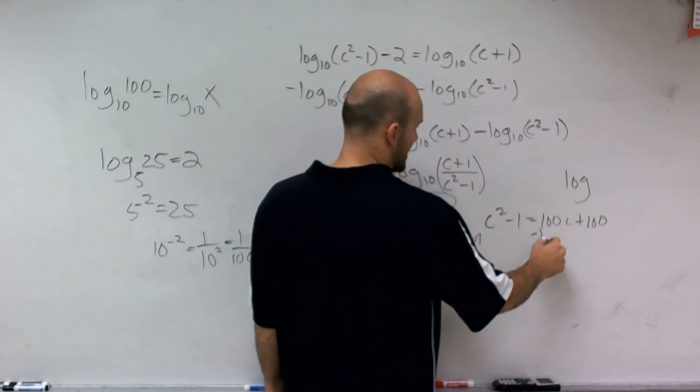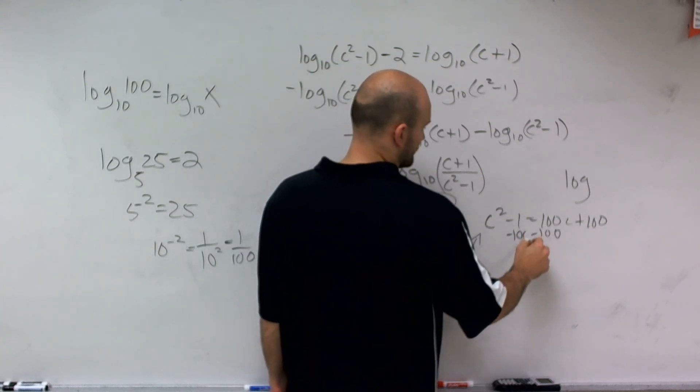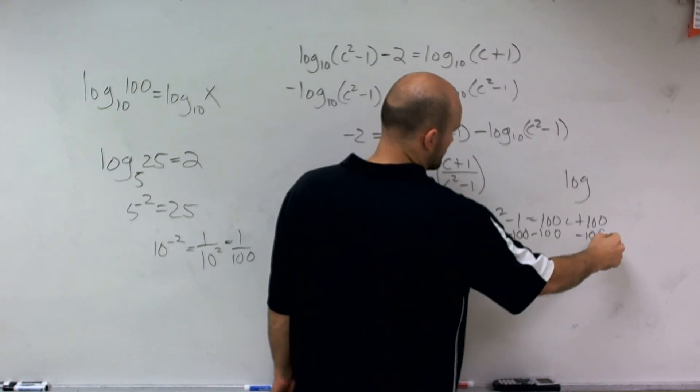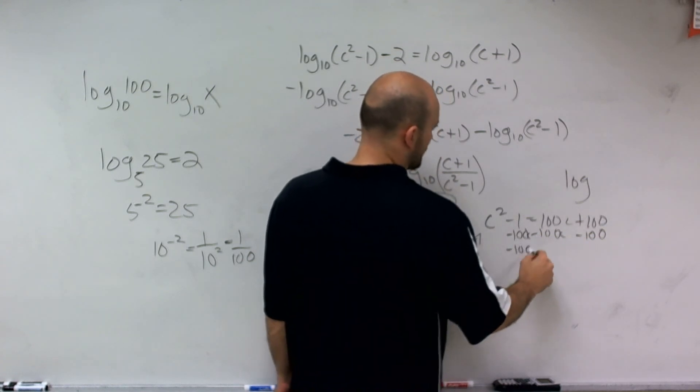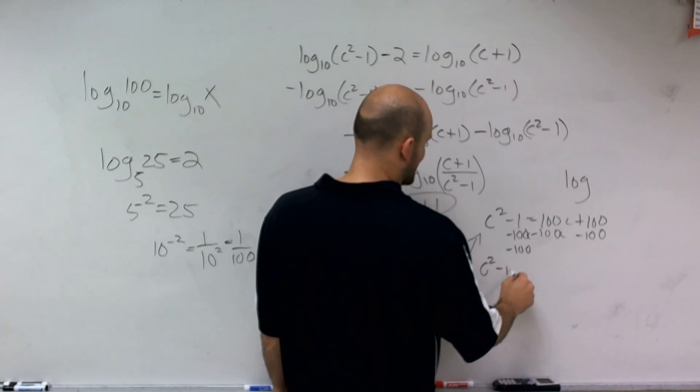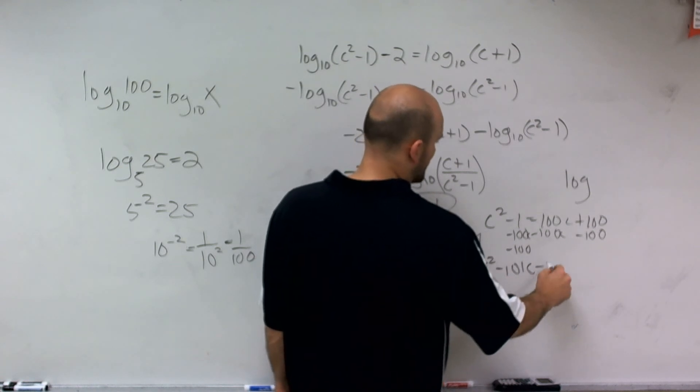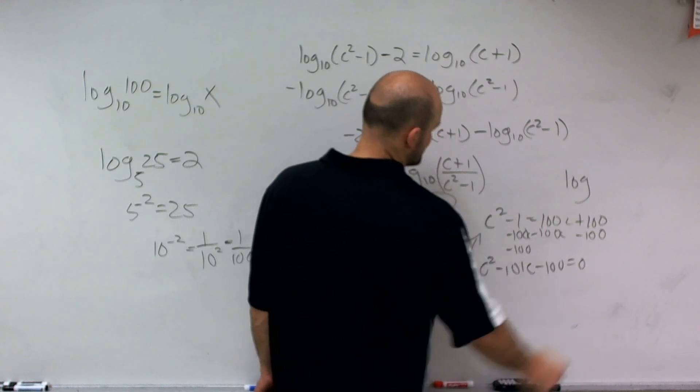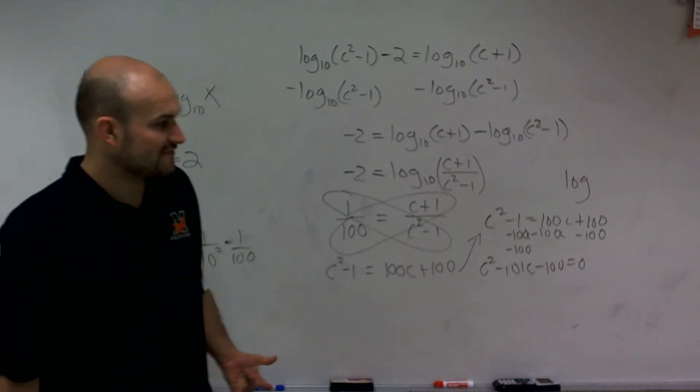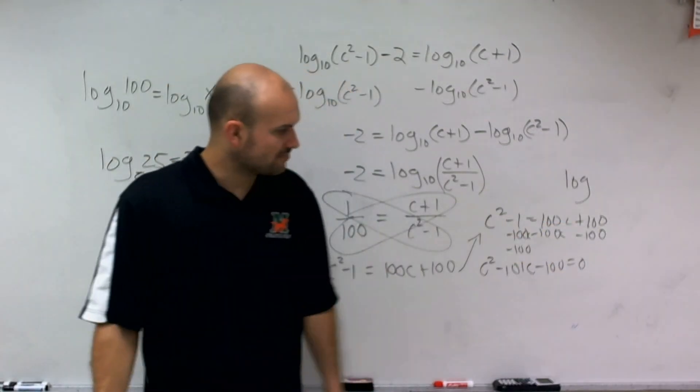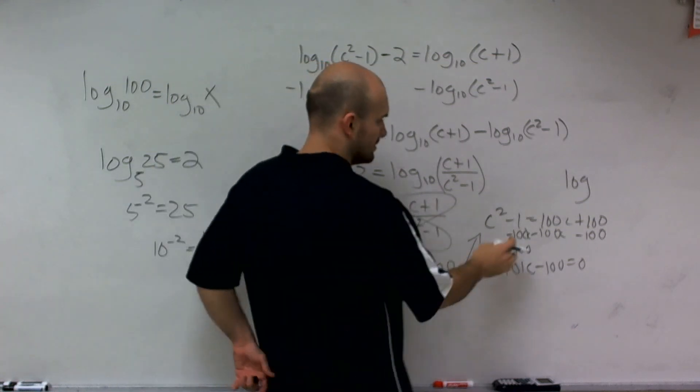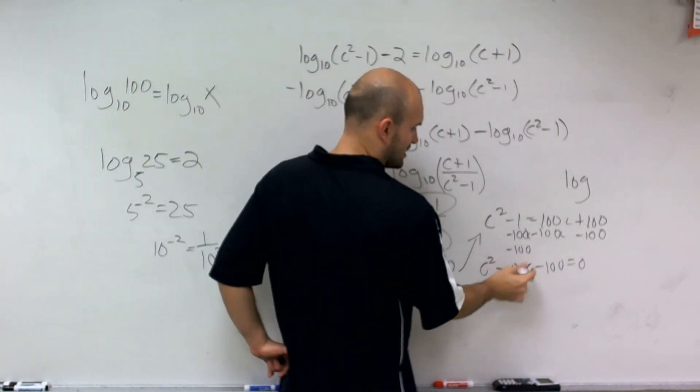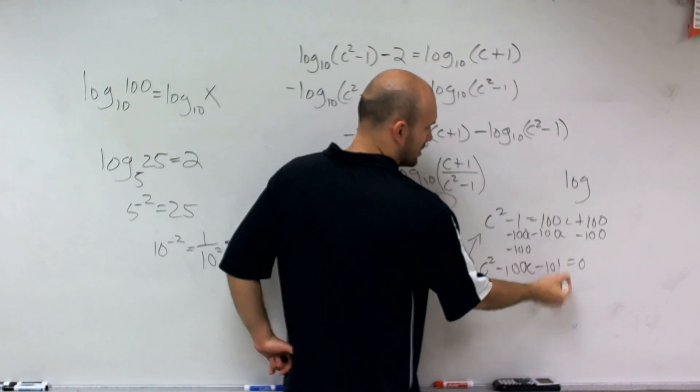So in doing that, I'll subtract 100c and then I'll subtract 100 as well. So I have c squared minus 101c minus... wait, that's wrong, that's a negative 1. So it's 100c minus 101.